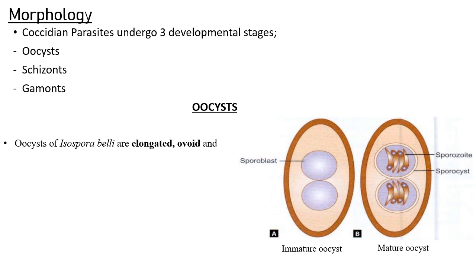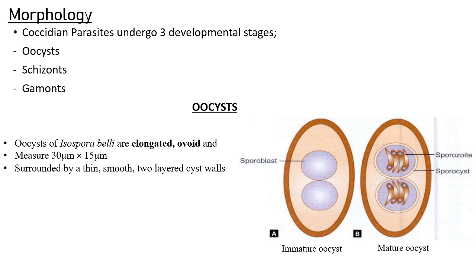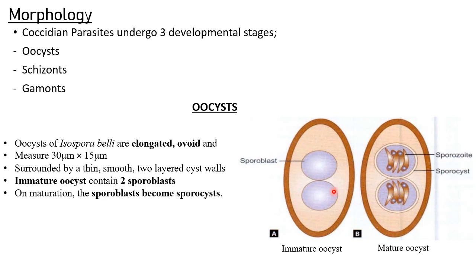The oocysts of Isospora belli are elongated and ovoid, as seen in the diagram. They measure about 30 micrometers in length and 15 micrometers in width, surrounded by a thin, smooth two-layered cyst wall. The immature oocysts contain two sporoblasts. Upon maturation, the sporoblasts become sporocysts because they now contain structures known as sporozoites — four sporozoites in each sporocyst. Altogether, a mature oocyst contains eight sporozoites.